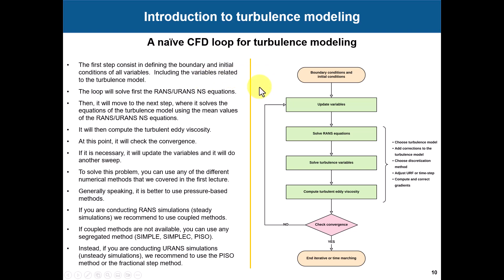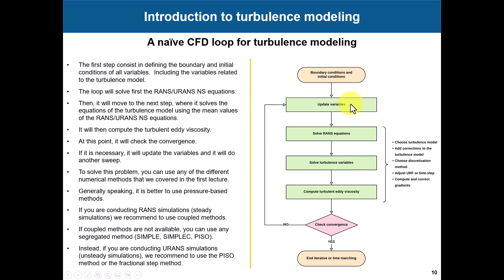A naive CFD loop for turbulence modeling: you start from boundary and initial conditions - not only for velocity, pressure, and temperature, but also for those turbulence quantities. You need to give a good approximation, something physically realistic - it is very important to know what you are doing. You get those quantities, start to solve the Reynolds equations, compute the turbulence quantity, compute the turbulent added viscosity, check convergence, and keep iterating. During this process you need to choose discretization schemes, adjust under-relaxation factors, time steps, correct gradients, and add corrections to turbulence models.